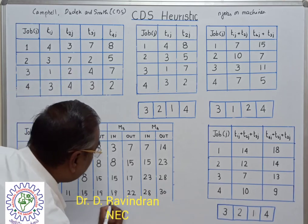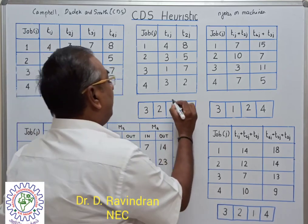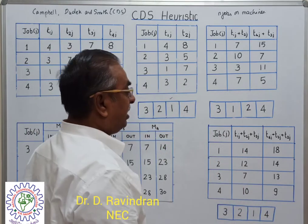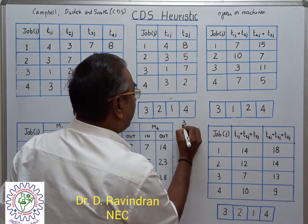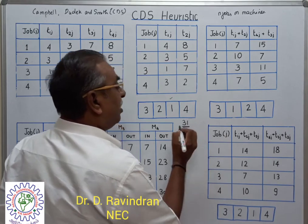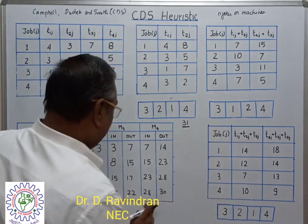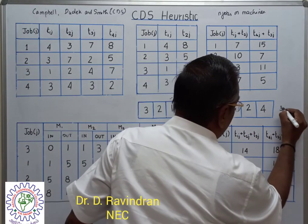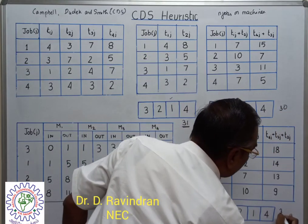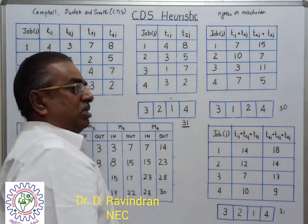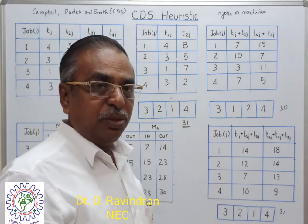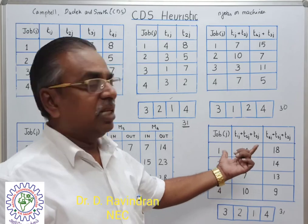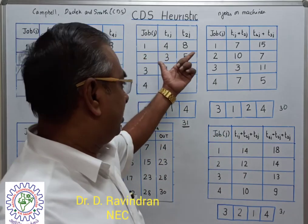Evaluating the other sequences in the same similar way: this sequence gives a maximum span time of 30 hours, and the other sequence gives 31 hours. Among all sequences, the one that gives the minimum maximum time is the best sequence. As per the CDS heuristic, the sequence 3, 1, 2, 4 which gives the minimum maximum time of 30 hours is the best sequence.